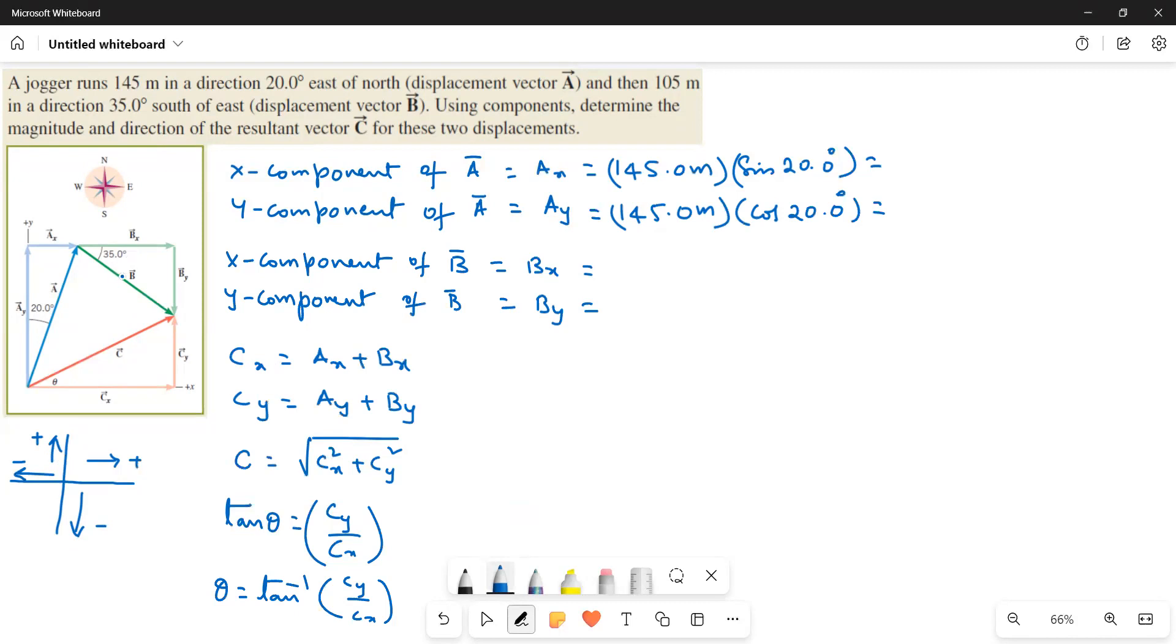Now Bx, we will write Bx is adjacent side. And then the distance is 105 meters. So 105 meters and then cosine 35 degrees.